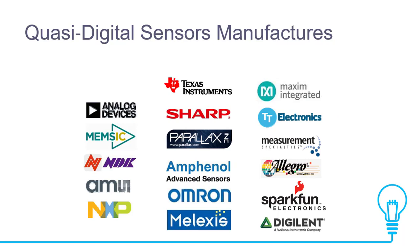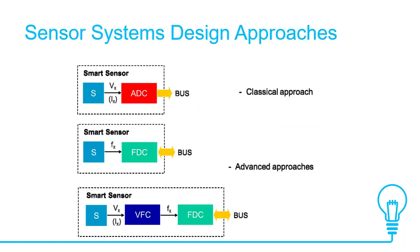Quasi-digital sensor manufacturers — these are some important manufacturers. You can Google them and find all the websites where you can find different types of sensors. Sensor system design approaches: for a smart sensor, V and I inputs go through an analog-to-digital converter and then to the bus — this is the classical approach. Similarly, for a smart sensor we can combine the VFC and FTC, and then it goes to the bus.